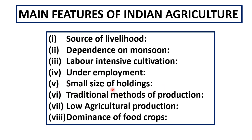The next feature is land holding size. The land holdings are very small, and due to the law of inheritance the size of land holdings is getting smaller and smaller. The next feature of Indian agriculture is traditional methods of production — most of the agricultural work is done by old techniques and traditional methods.